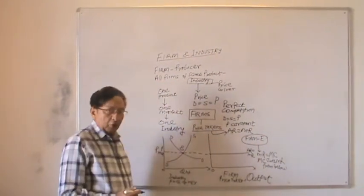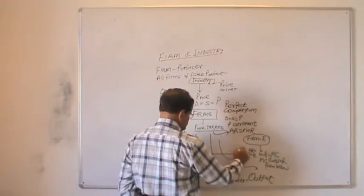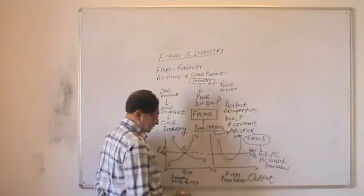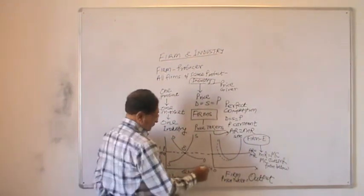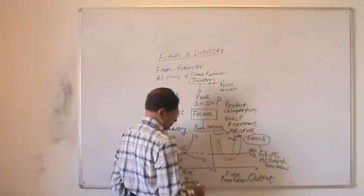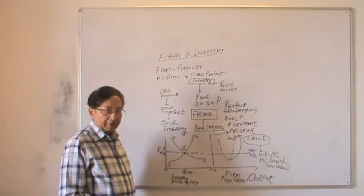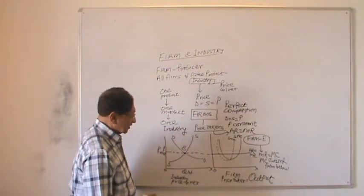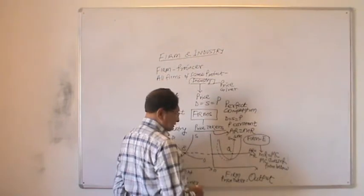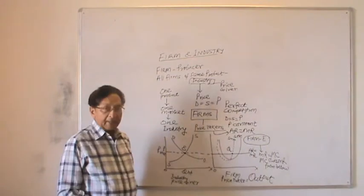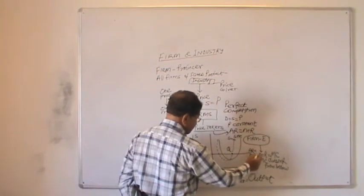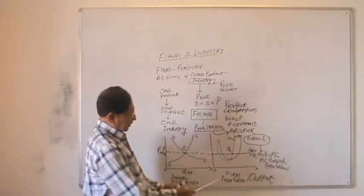If we draw short period average cost curves, they have a U-shape. This is the short period average cost; short period marginal cost falls at a fast rate, touches the minimum point, and then rises at a fast rate. Now these two conditions of equilibrium, or output determination, are fulfilled at point Q. Q is the point which gives equilibrium to a firm. A producer fulfills two conditions: marginal revenue is equal to marginal cost.